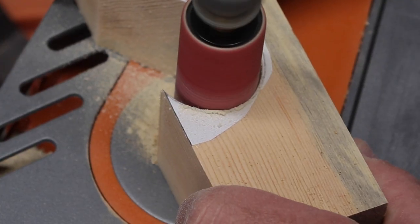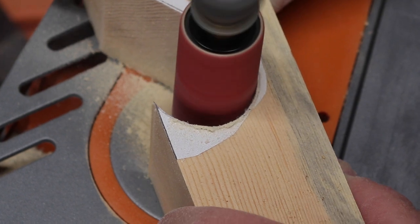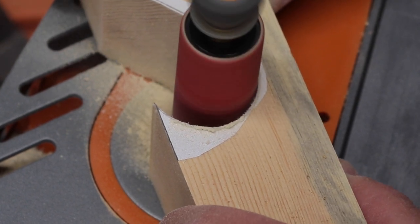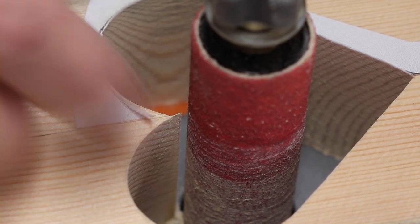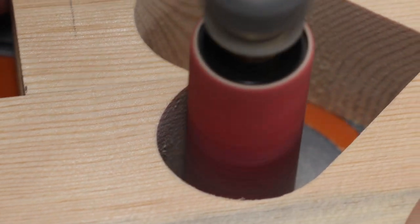Now on the spindle sander I would sand all the bandsaw marks off and sand right up to that line from the template. Once I had it all up to the line I could take off the remaining template and holding the pieces together I could get rid of that little point that comes down at the top of the heart.